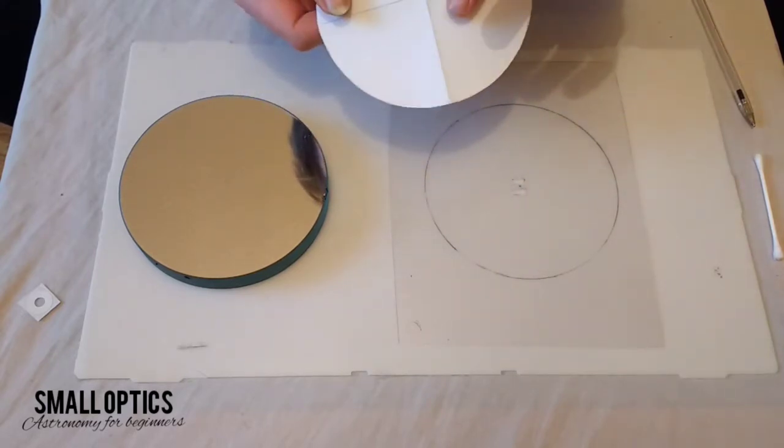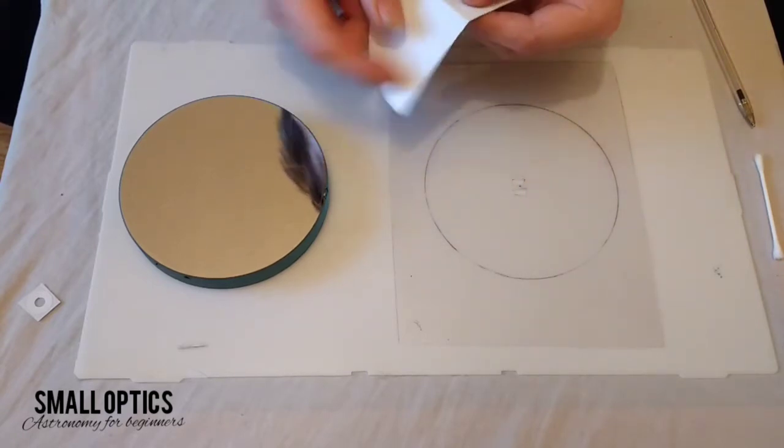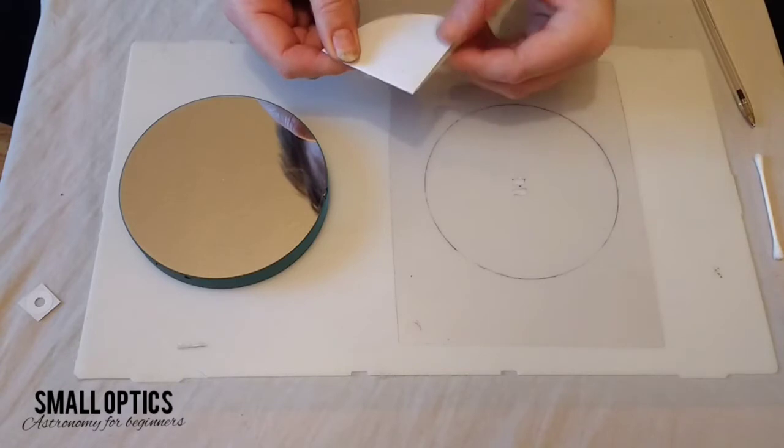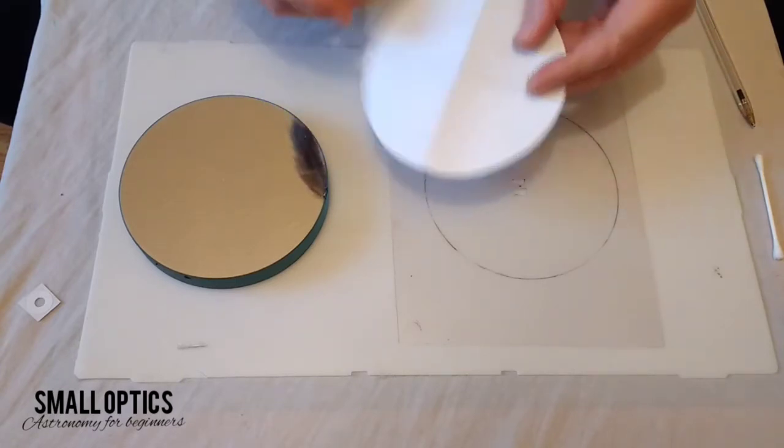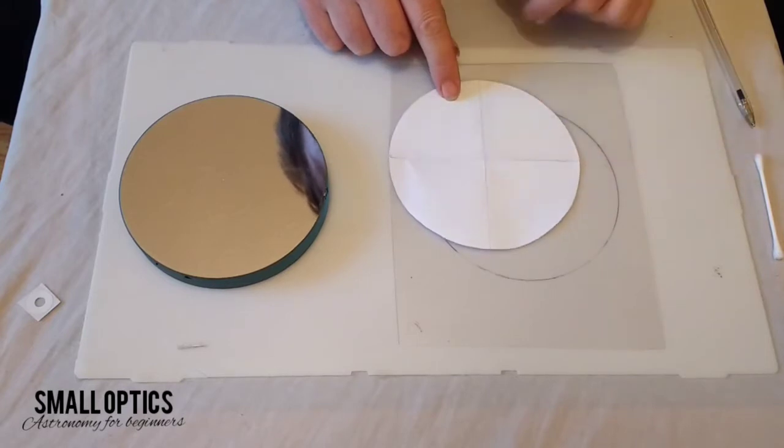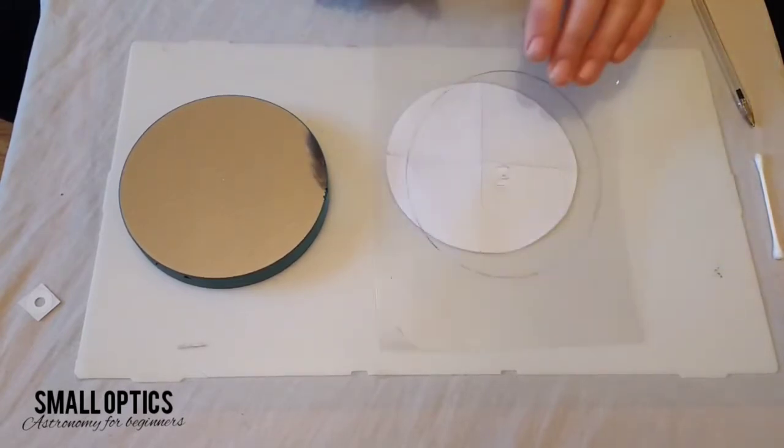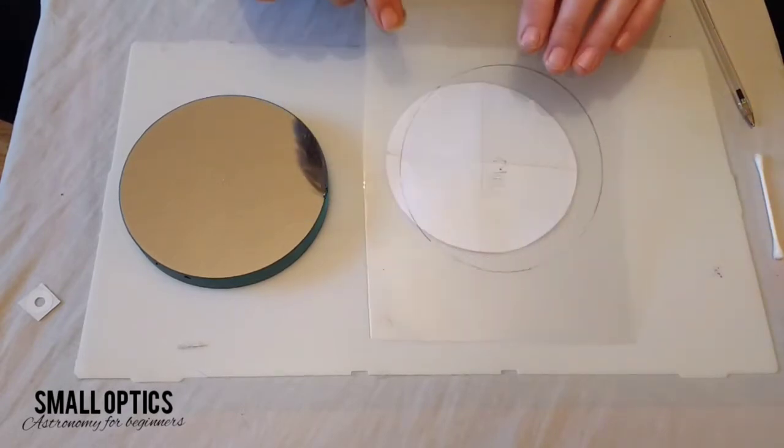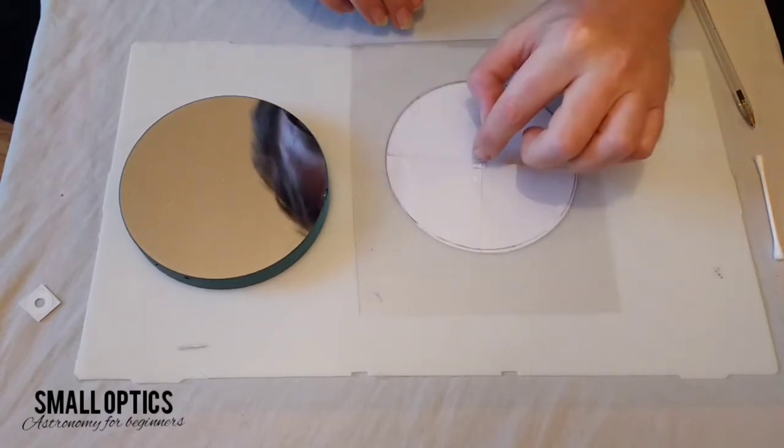So obviously when you've unfolded it, you've got a nice template now showing you exactly where the center of the circle is. And then all you would do then is, having first drawn your circle on the plastic sheet, is to just line the two up like that and then again just mark where the exact center is of this circle.